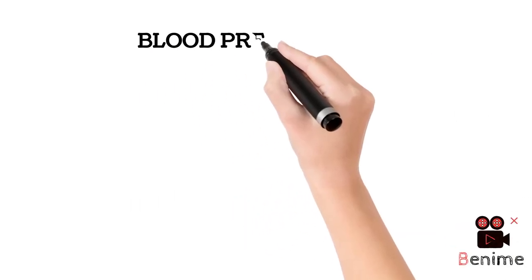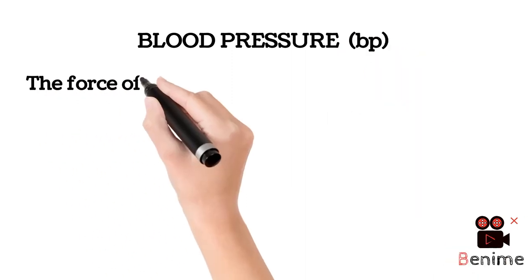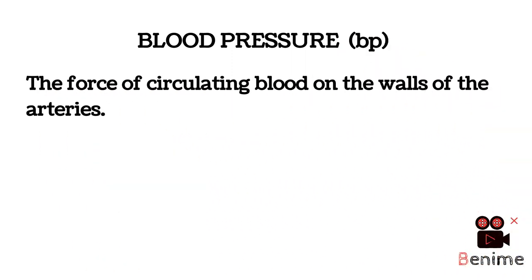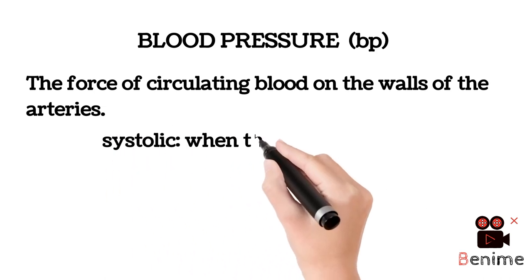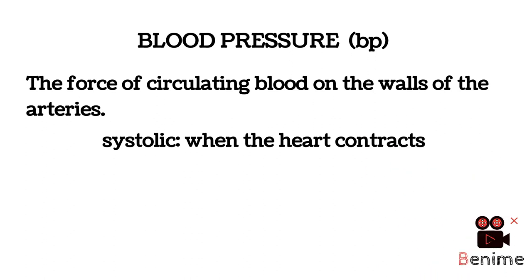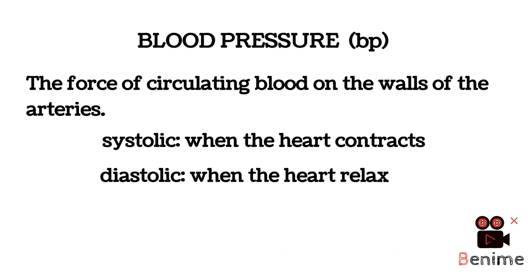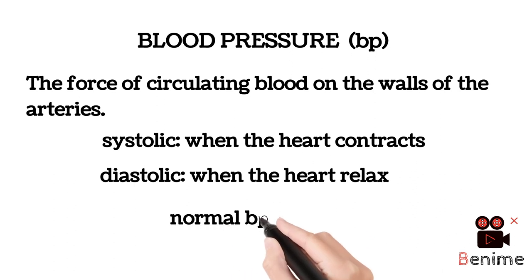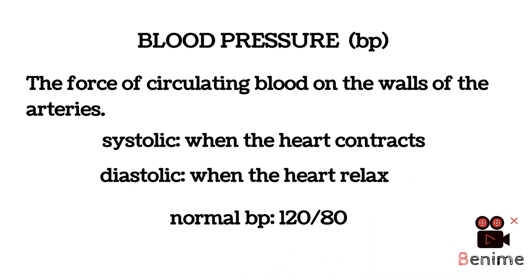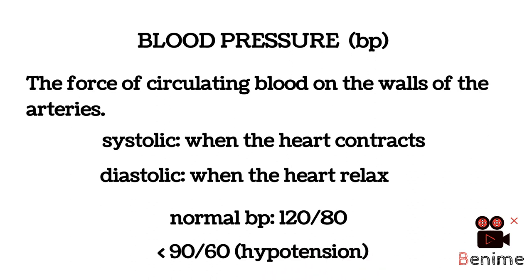Now let's discuss blood pressure (BP). It is the force of circulating blood on the walls of arteries, especially arterioles. There are two types of BP: systolic, which is the pressure of blood during contraction of the heart, and diastolic, which is the pressure of blood during relaxation of the heart. Our normal BP is 120 over 80, where 120 is the systolic and 80 is the diastolic. When blood pressure decreases to 90 over 60, it is called hypotension.